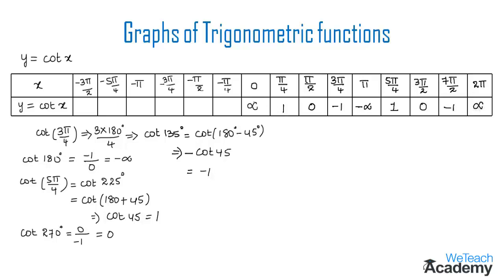Now let us find the values for negative radians. cot(−π/4) = −cot(π/4) = −1. For −π/2: −cot(π/2) = 0. For −3π/4: the value is 1. For −π: −(−∞) = ∞. For −5π/4: the value is −1. And for −3π/2, the value is 0. So here we have all the values of y corresponding to the different values of x.